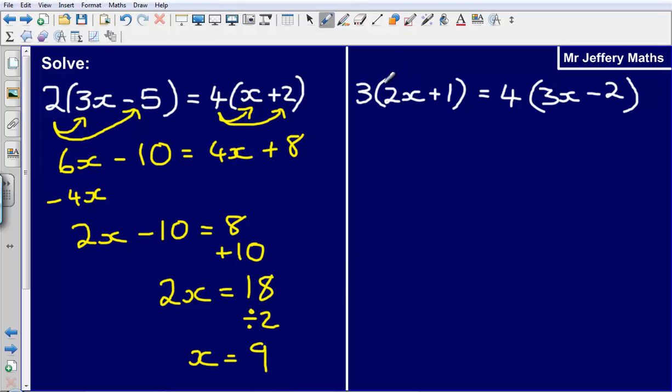Next up I've got 3 bracket 2x plus 1 is equal to 4 bracket 3x minus 2. So same thing again, I'm just going to expand each of these brackets. So if I expand this one this leaves me with 3 multiplied by 2x which is 6x, 3 multiplied by 1 which is just going to be plus 3.